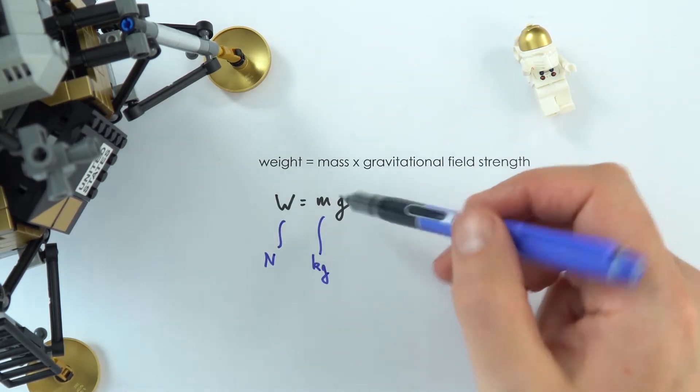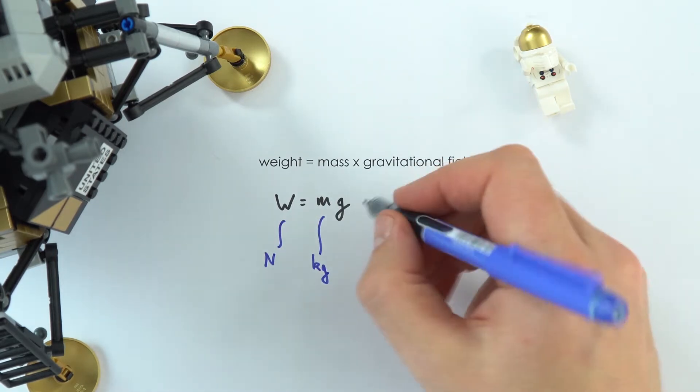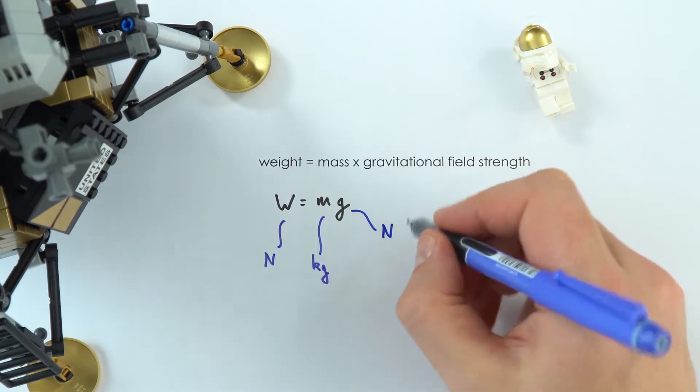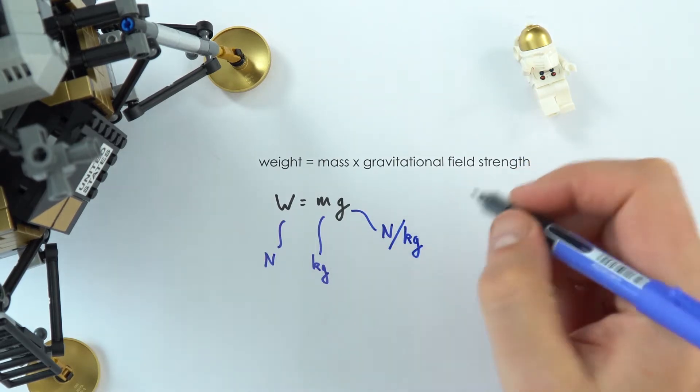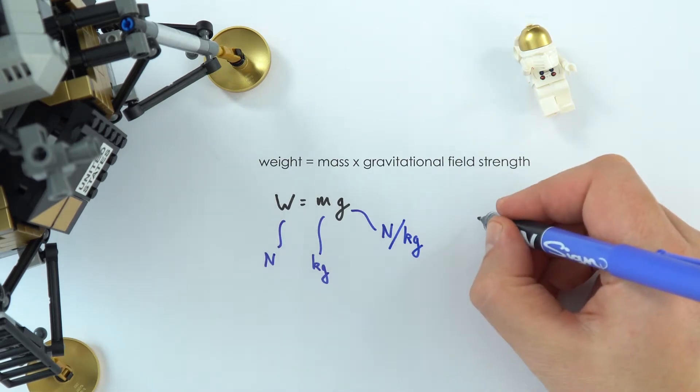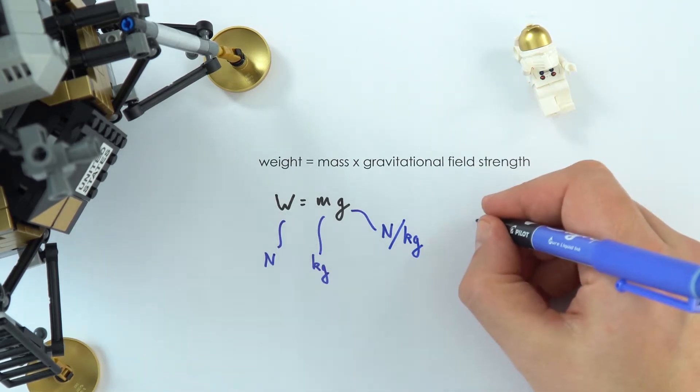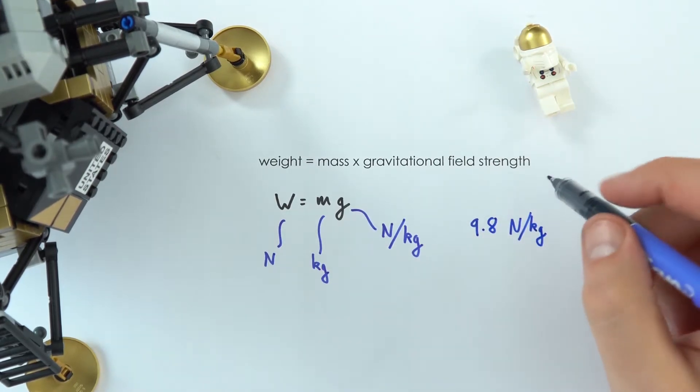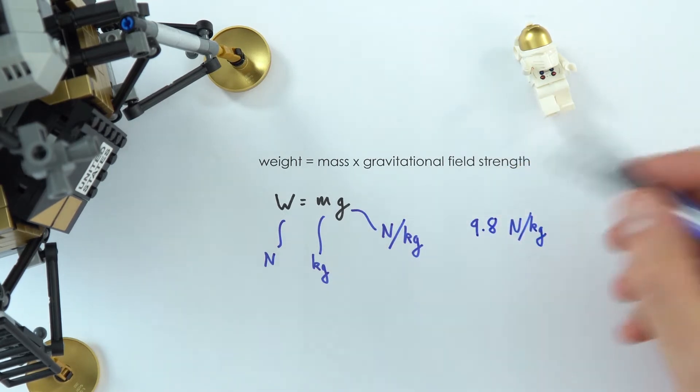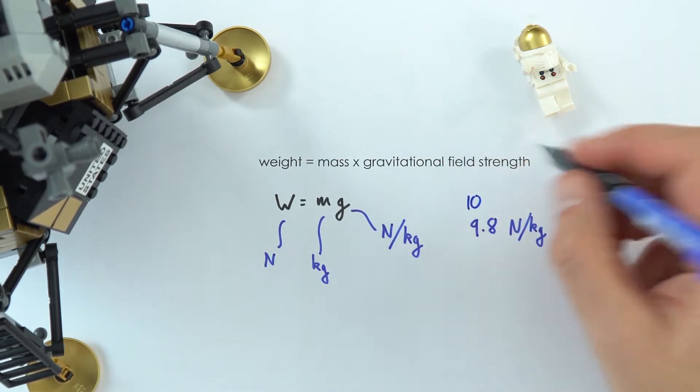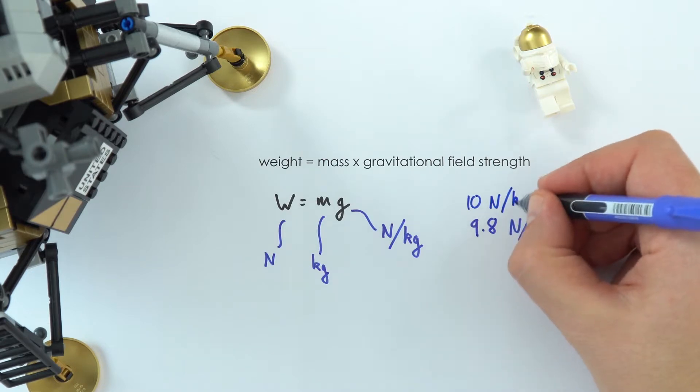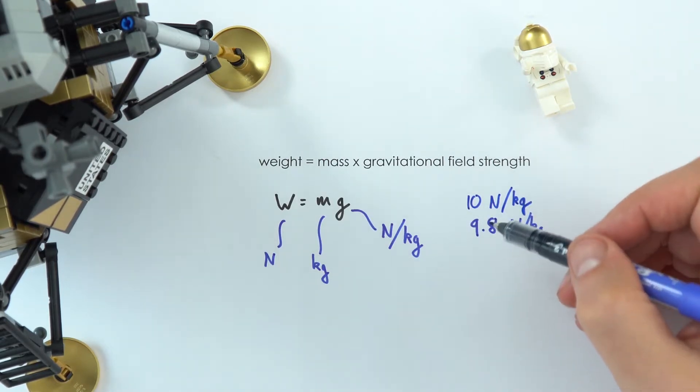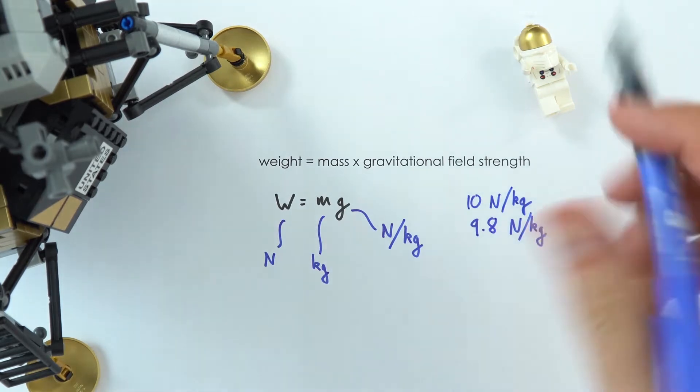Now, because g is the force per unit mass, this has then got the units of newtons per kilogram. And on Earth, the value of this is approximately 10 newtons per kilogram. Often, it's also given as 9.8 newtons per kilogram, but it really depends on sometimes which exam board you're doing or which question you've been given. Sometimes they prefer to use the value of 9.8, and if you're not sure, this is a better one to use. Sometimes they just round up and say, actually, that's close enough to 10 newtons per kilogram. And actually, when it comes onto A-level, we tend to use 9.81 newtons per kilogram.